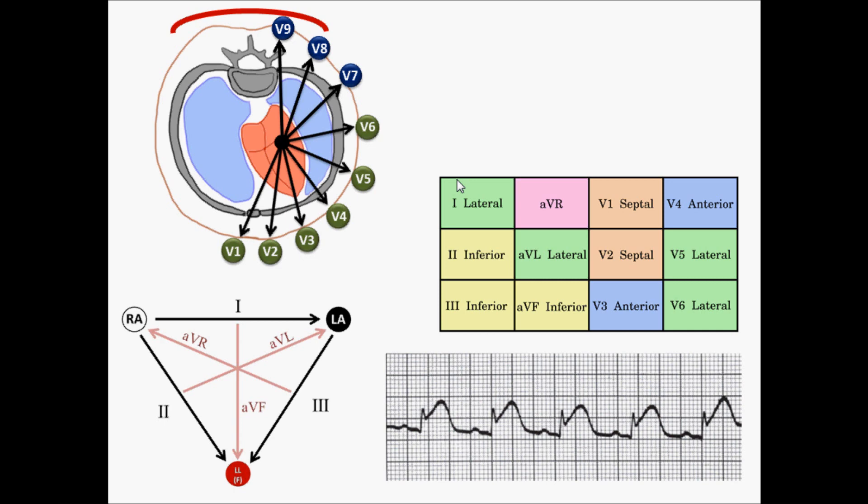And what we do is we take any of these precordial leads and we move them posteriorly along the same dermatomal line. V7, V8, and V9 are the leads that result. And these will give you a look at the posterior left ventricular wall. And you may actually find a posterior STEMI by doing that.